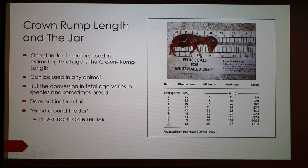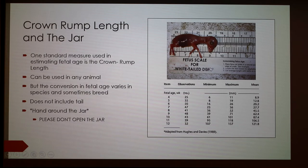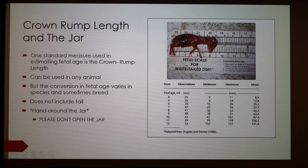You'd have the age right here, the observations showing how much information they had and how relevant the study was, and then a minimum length, maximum length, and the mean. So what you would do is place your fetus — this is a deer fetus, just the first one I found. You go from the rump, right here, all the way to the crown of the head. The big thing is to make sure you're not including the tail, because that will add extra length and skew your data.